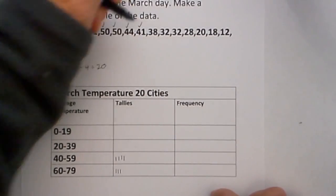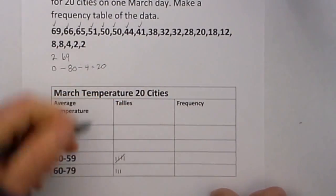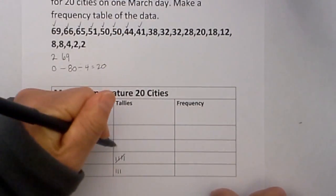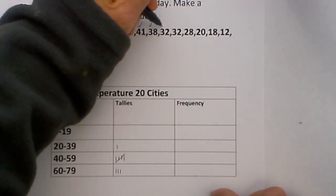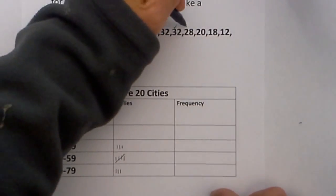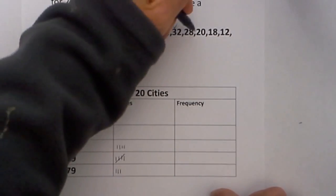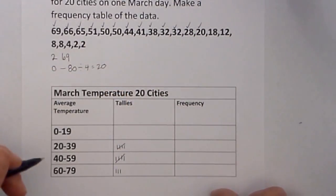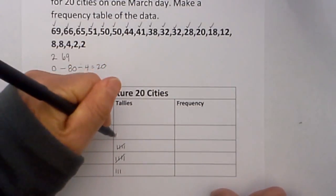Then when I get to 41 I am going to draw a line like this and this tells you that there is a group of 5. I next move to 38 and move to the next row. I will put a check for 32, 22, 28, 20, yes we are still in that row so I will do another mark for 5 and then finally check for 18.